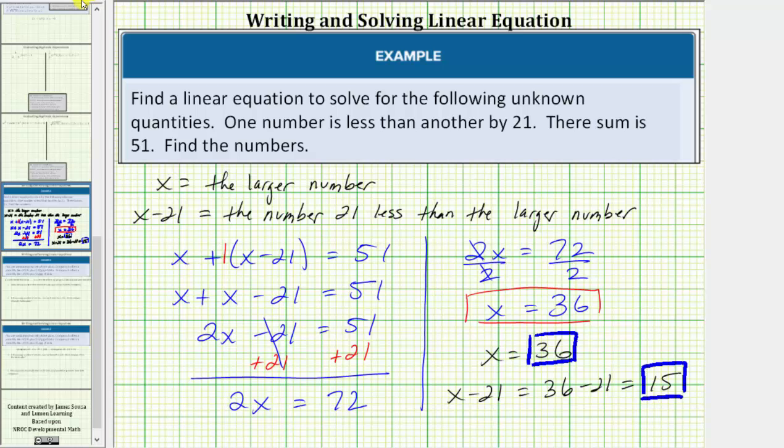To check our work, let's check the sum. Notice thirty-six plus fifteen does equal fifty-one, the given sum, which verifies our two numbers are correct.